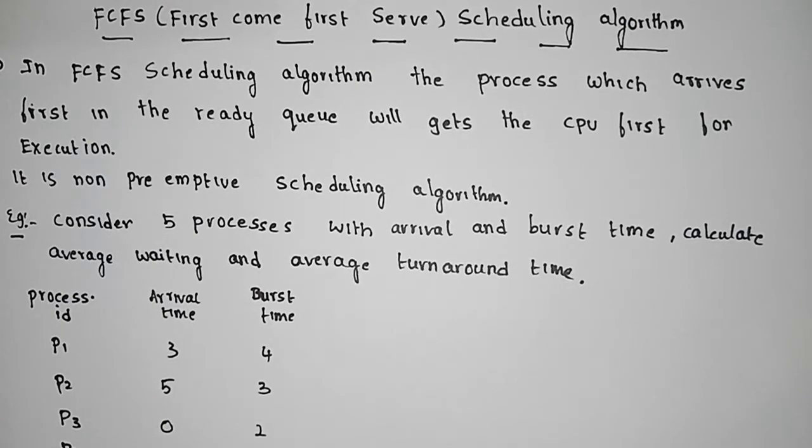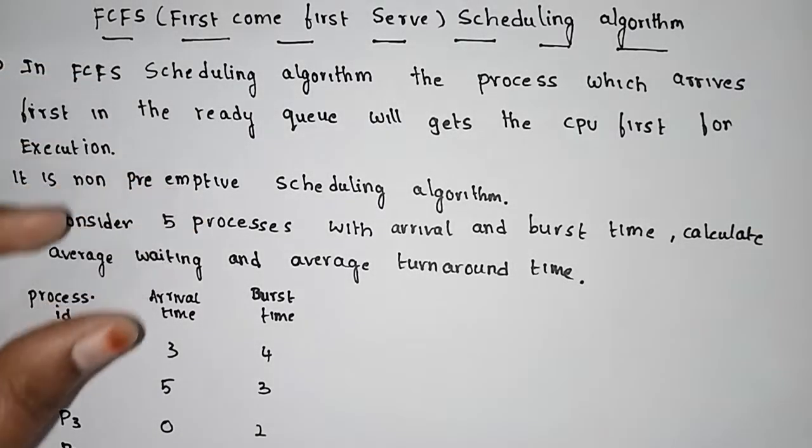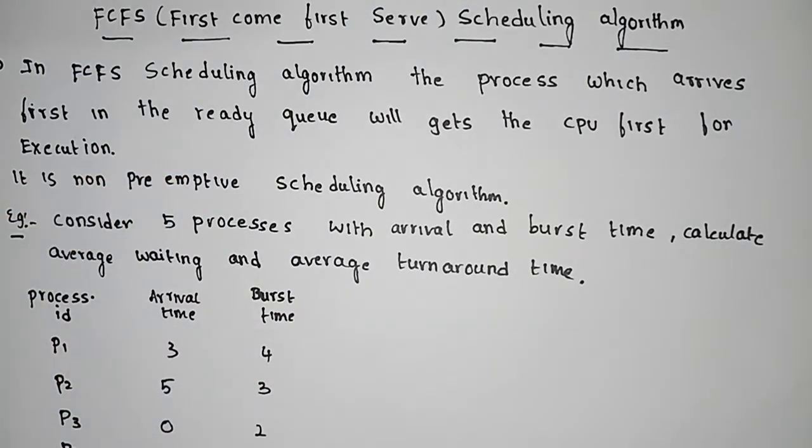In FCFS scheduling, the process which arrives first in the ready queue will get the CPU first for execution. That means the first process in the ready queue will get the CPU first for execution. That is FCFS.